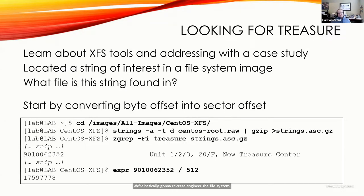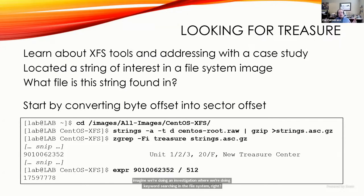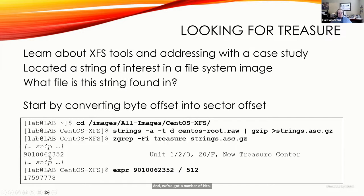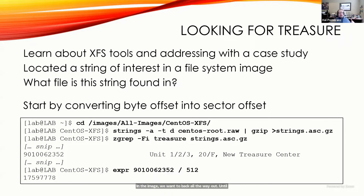We have a list of keywords useful for our investigation — maybe financial crime-related — and we've got a number of hits on those keywords, including a byte offset to where the keyword was encountered. We want to start with that raw byte offset and back all the way out until we can identify what file name that keyword appears in. If you find a keyword in a piece of evidence, there's often other evidence near that file that may also be of interest.